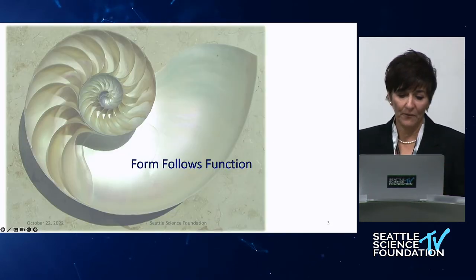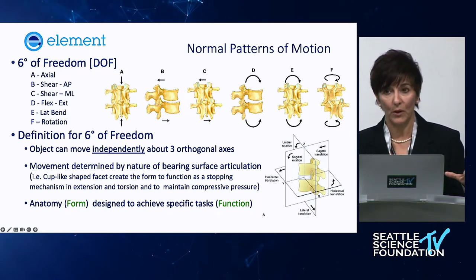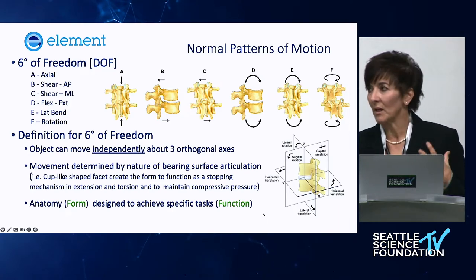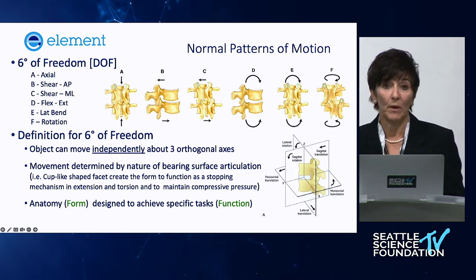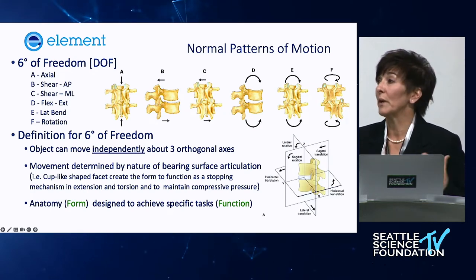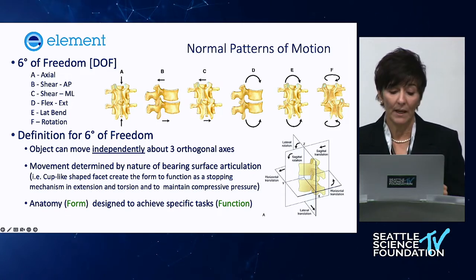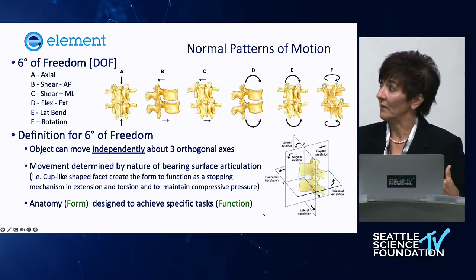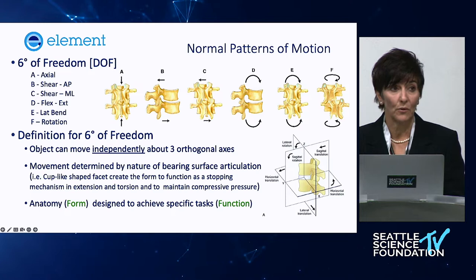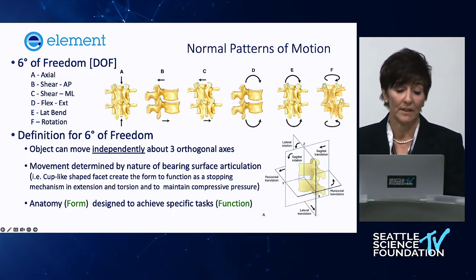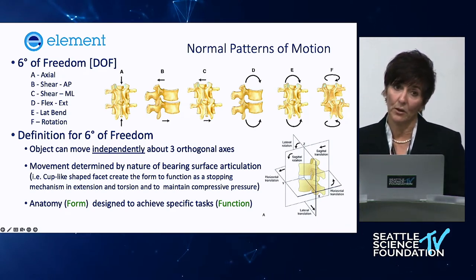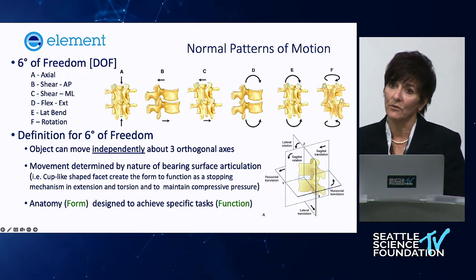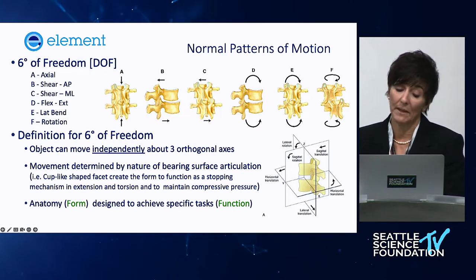Going back to form follows function, I want to give a brief overview of anatomy and mechanics so you start to think about how we are designed as perfect animals with respect to form and function. Our spines move in multiple planes — they translate, rotate, and translate in six degrees of freedom about three orthogonal axes, determined by the nature of the bearing surface articulation. The facet joint is a perfect example: they're cup-shaped with a small gap pressure, and if you distract them, you disrupt their form and function.